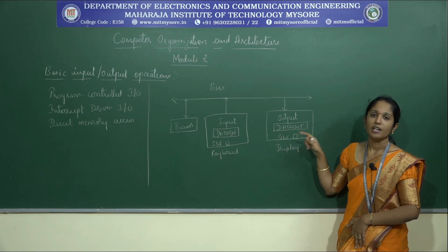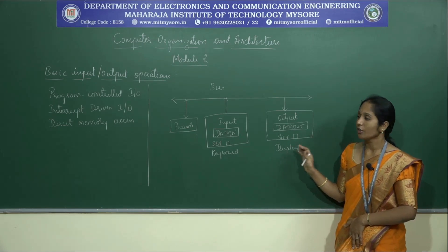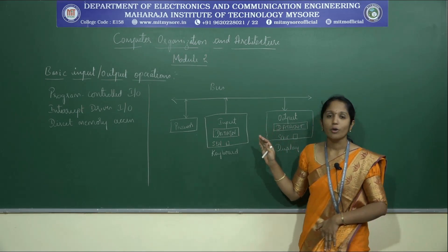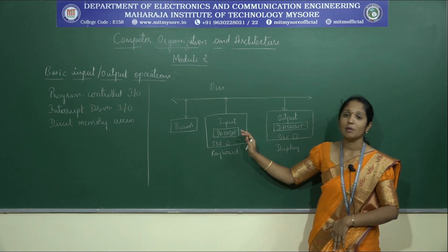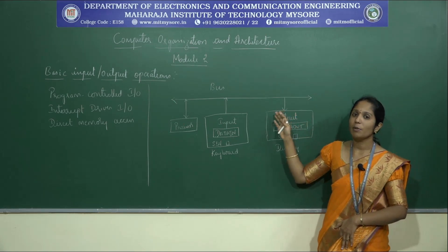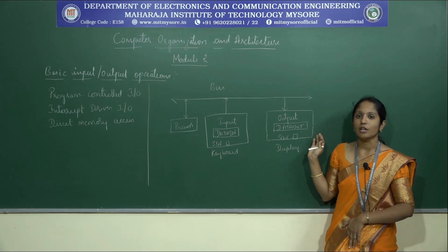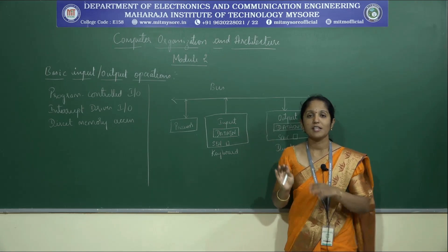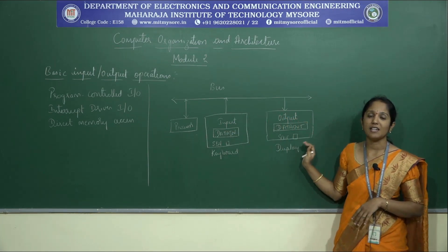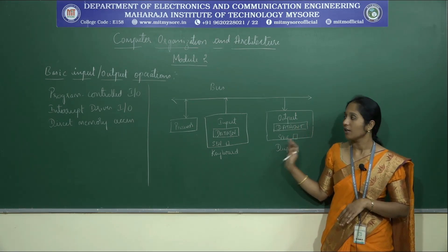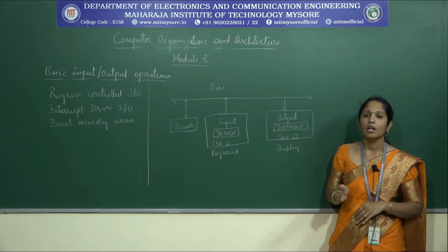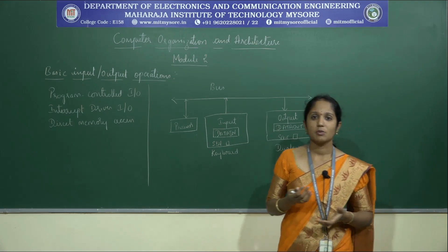In program controlled IO, you have a program in which a set of instructions accepts the character from the input device, and another set of instructions gives output to the output device. The processor needs to wait until the input is available in the input device and wait until the output device is ready to display or accept the character. Now let us see the instructions related to these I/O operations.